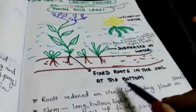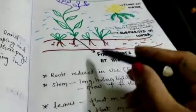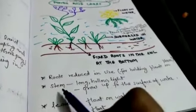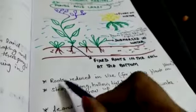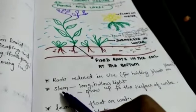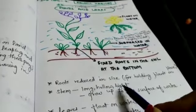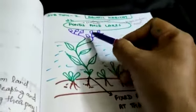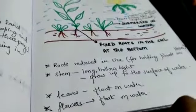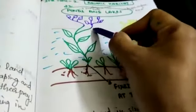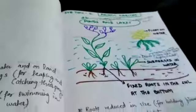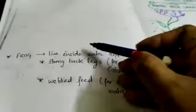About their adaptation: roots are reduced in size. Roots function for holding plants. About stem, they are hollow, long, and light, grow up to the surface. Just here, this stem is hollow, long, and it grows up to the surface of water. Then leaves and flowers are floating on water.